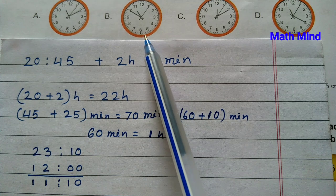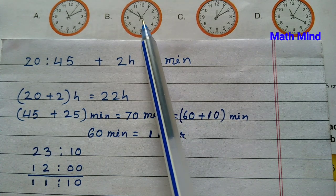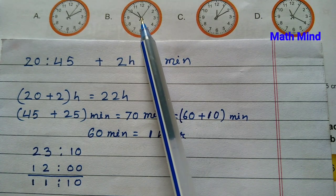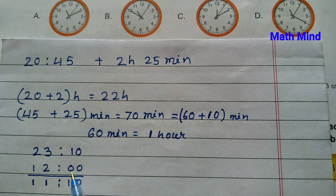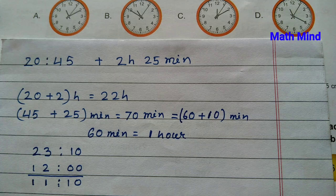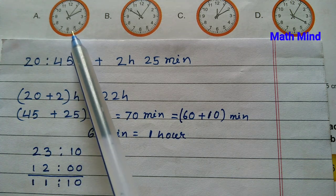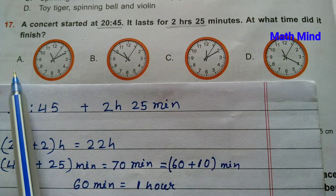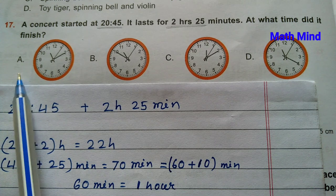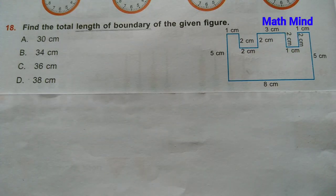Since one complete rotation of the hour hand is 12 hours, subtracting 12 hours from 23:10 we get 11:10. After one complete rotation the hand reaches 11:10. So option A is correct: the concert finished at 11:10.